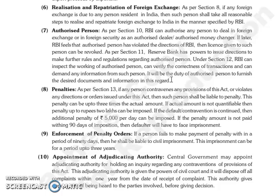As per Section 11, जो Reserve Bank है उसके पास powers है to issue directions, to make further rules and regulations regarding authorized person. Under Section 12, जो RBI है वो inspect कर सकती है working of authorized person की, verify कर सकती है correctness of transactions की, और demand कर सकती है कोई भी information उस person से. और ये duty होगी authorized person की कि वो furnish करे desired documents और information उस regard में.